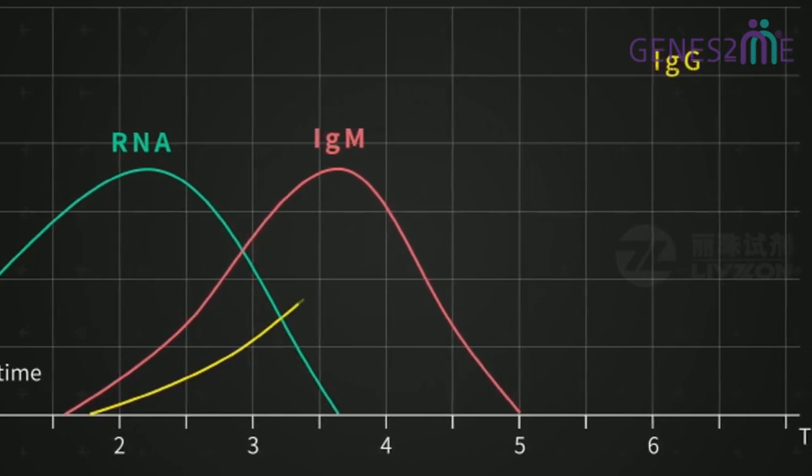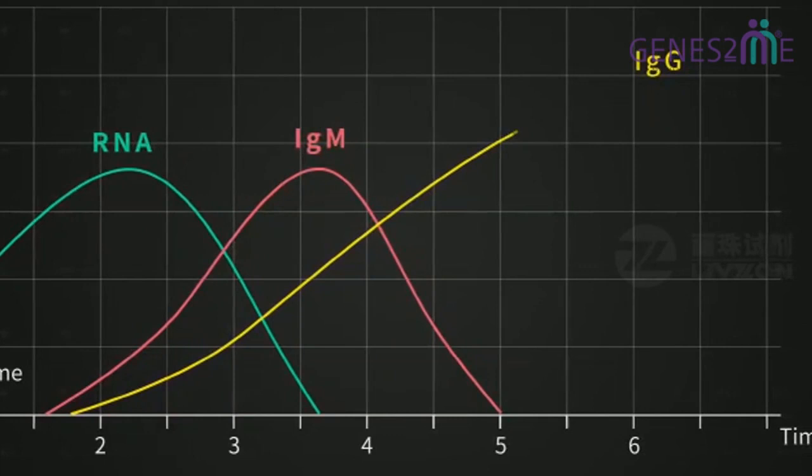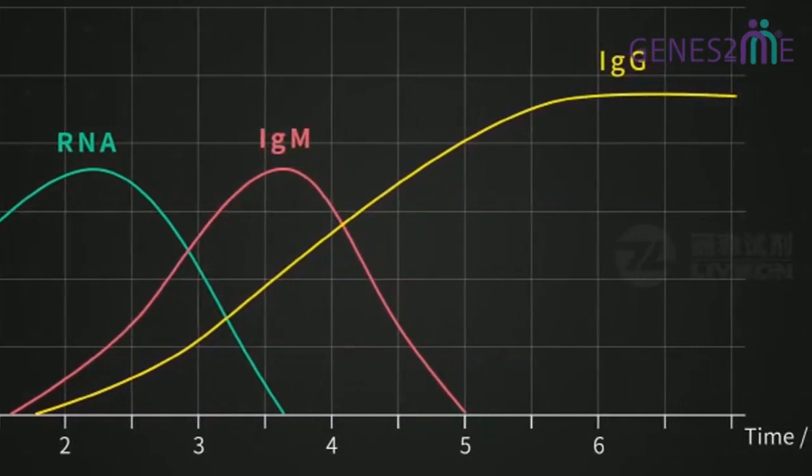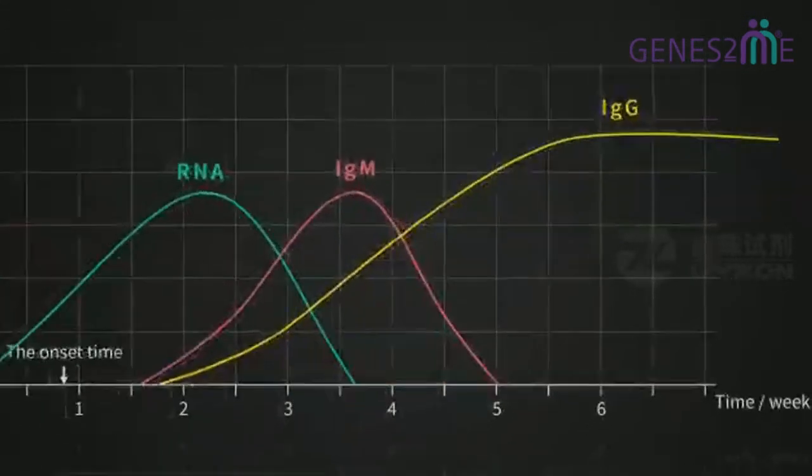IgG antibody appears a little bit later than IgM. Once it appears, it will rise continuously and lasts in human body for months or even years.